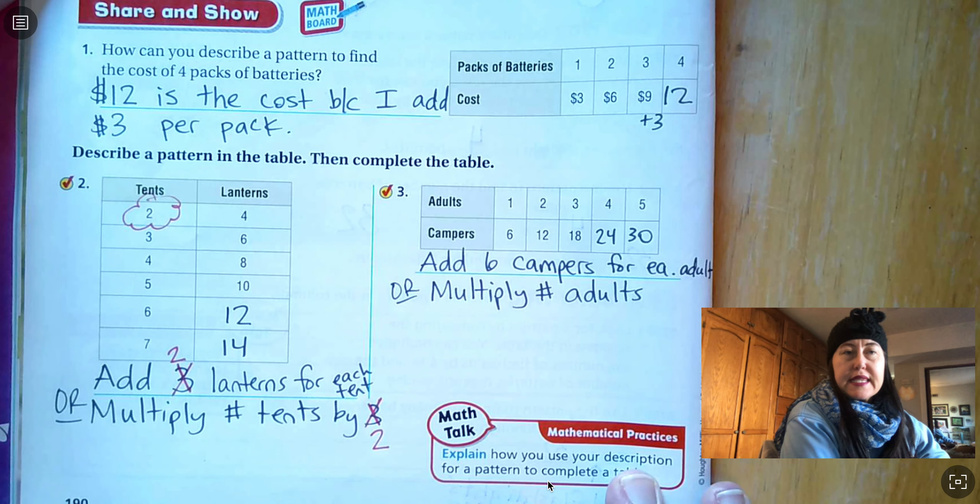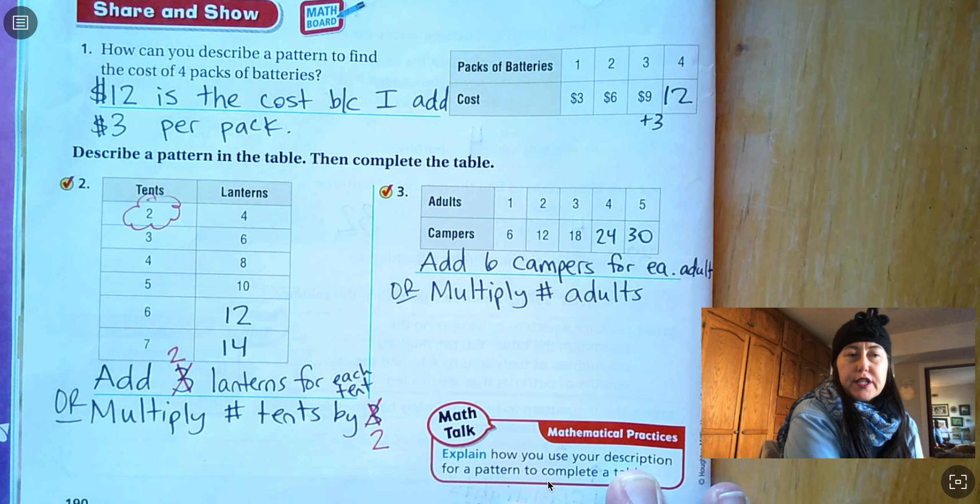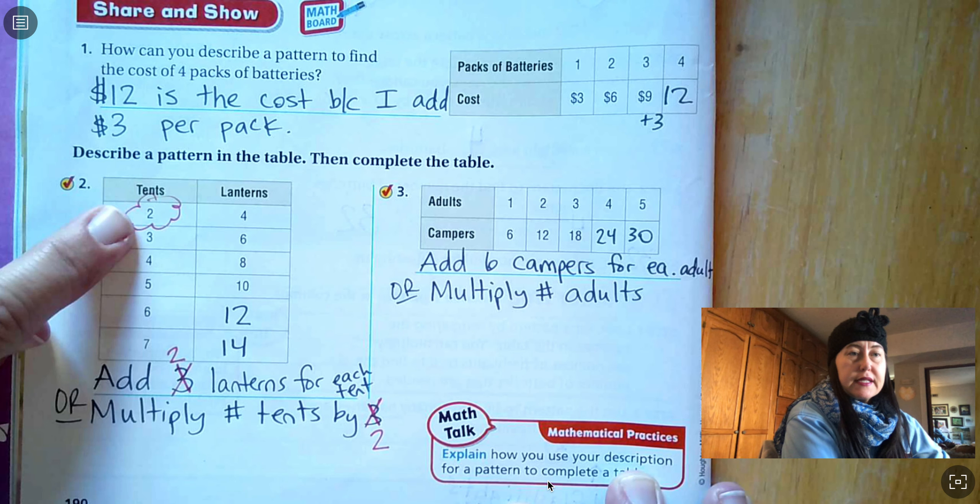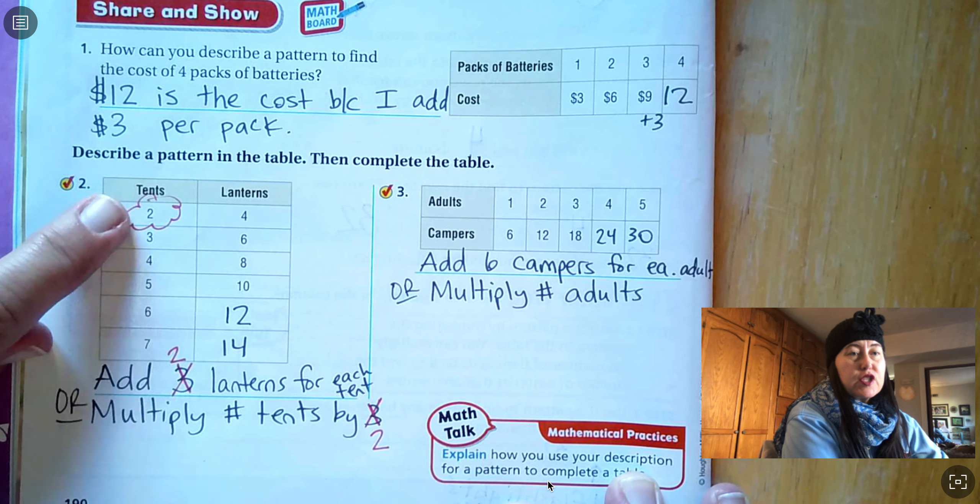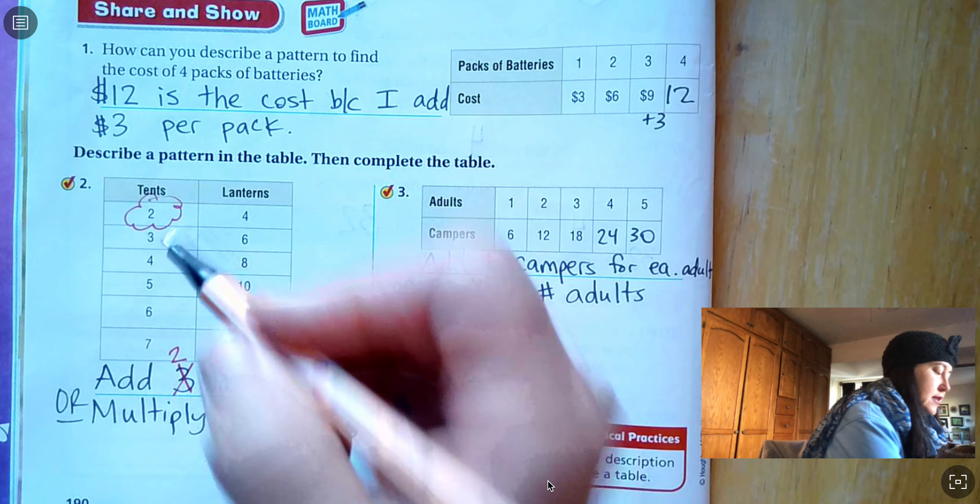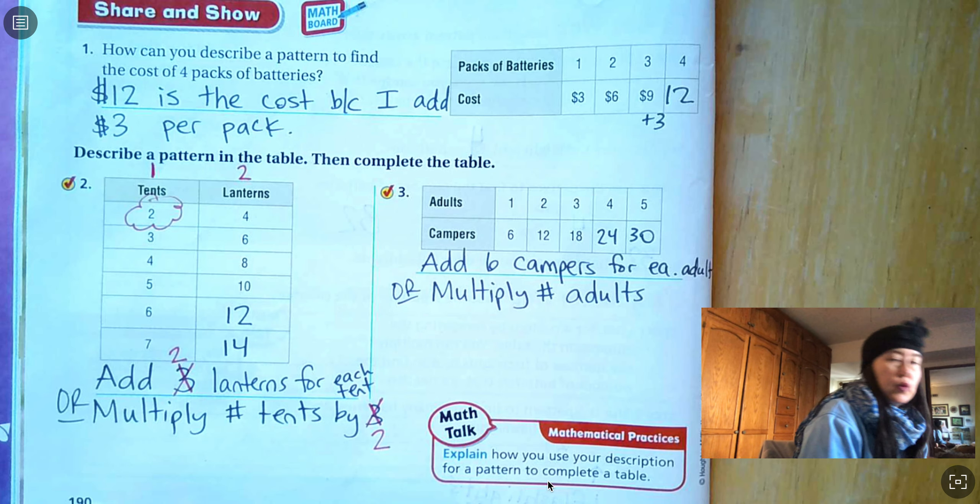All right, math thinkers, let's get to some of our answers. I hope you took the time to work through these. This number two was a little tricky because they never told us how much one tent could hold, how many lanterns one tent needed. But if two tents needs four, then I could just figure that out, right? One tent would need two lanterns.